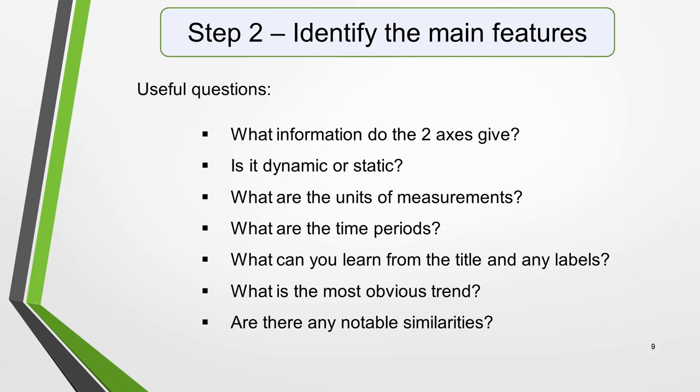There will be lots of information in the graphic to help you identify the main features. Here are some useful questions to ask: What information do the two axes give? Is it dynamic or static? What are the units of measurement? What are the time periods? What can you learn from the title and any labels? What's the most obvious trend? And are there any notable similarities? I give more detail on how to use these questions, plus downloadable checklists for identifying the main features of all seven types of IELTS Academic Task 1 questions, in the lesson on how to understand and analyze Task 1 questions. There's a link to it in the notes below this video.